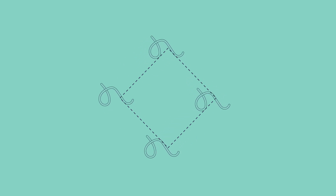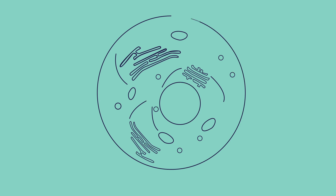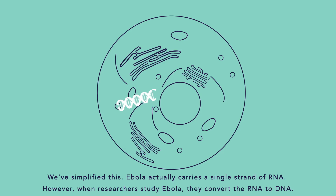Understanding how Ebola spreads between people and changes with time helps us predict and stop its spread. Like all viruses, Ebola is only able to reproduce by hijacking living cells. First, Ebola enters a human cell and releases its DNA.